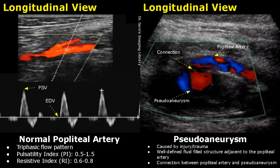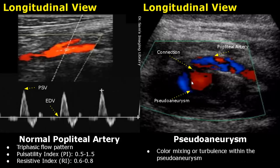A pseudoaneurysm occurs in case of injury or trauma to the popliteal artery. A well-defined fluid-filled structure can be seen adjacent to the popliteal artery, and we will find a connection between the pseudoaneurysm and the popliteal artery. We will also find color mixing or turbulence within the pseudoaneurysm — we can see a mixing of colors, both red and blue, inside this pseudoaneurysm.